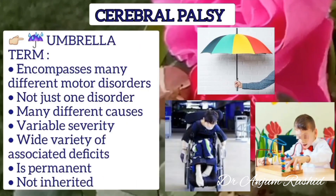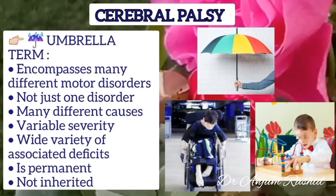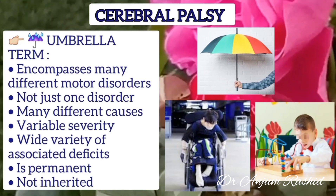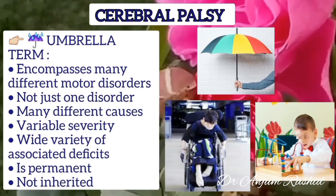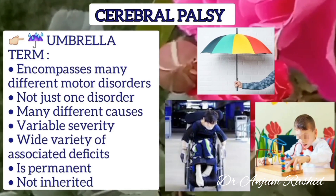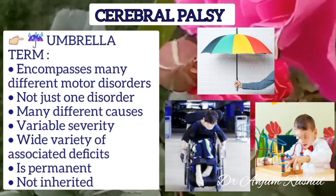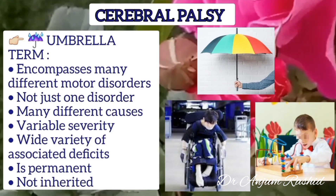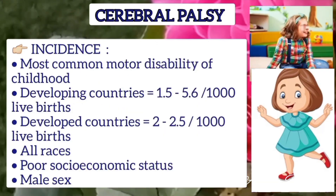Cerebral palsy is an umbrella term. It encompasses many different motor disorders and is not just one disorder. It has many different causes and is of variable severity. There are a wide variety of associated deficits, and it is a permanent condition and not inherited.